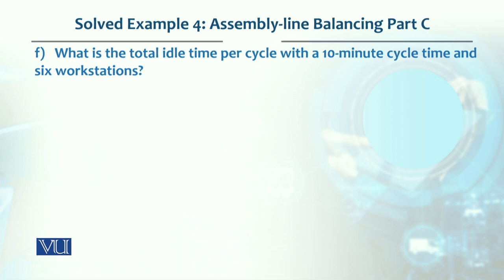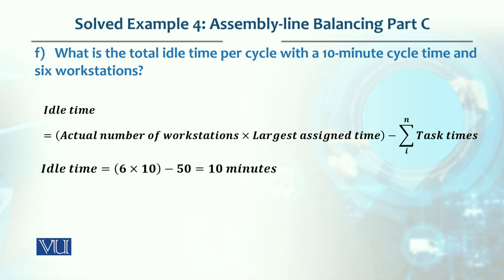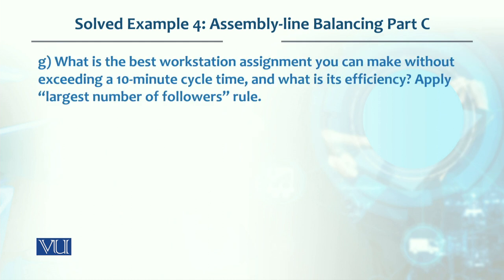Total idle time per cycle is calculated as: actual number of workstations multiplied by cycle time, minus total task time. Total task time is 50 minutes, actual workstations are 6, and largest assigned time is 10. So 60 minus 50 gives you 10 minutes as the idle time on this assembly line.